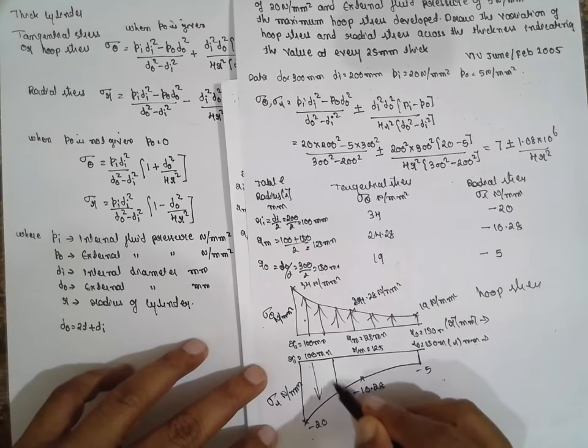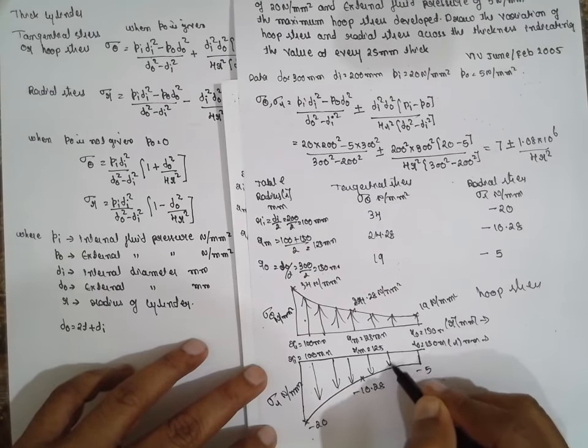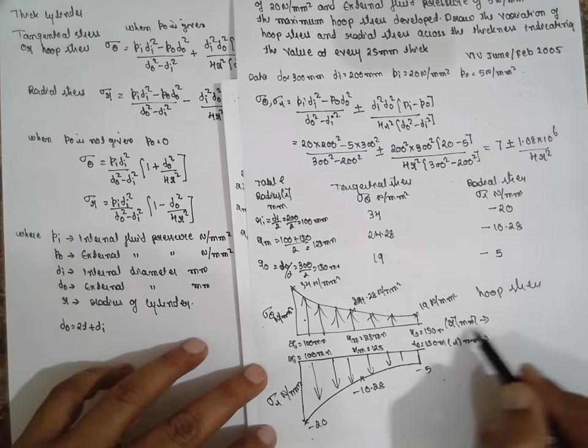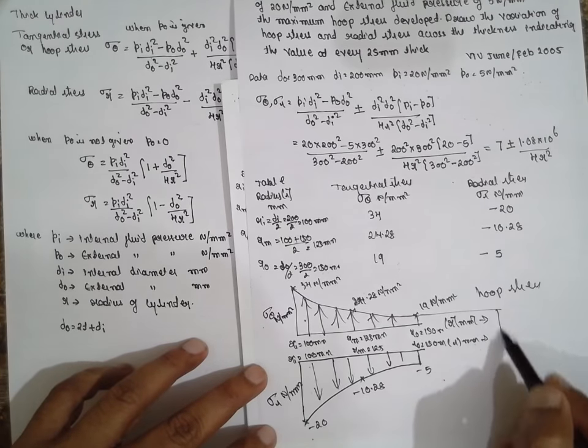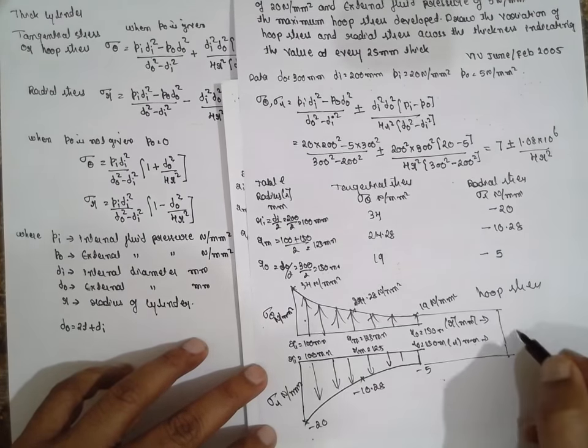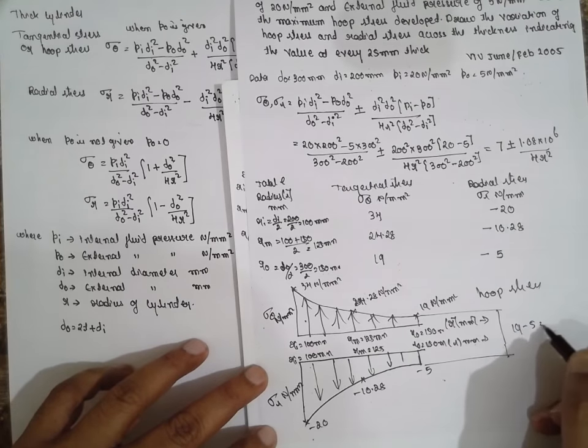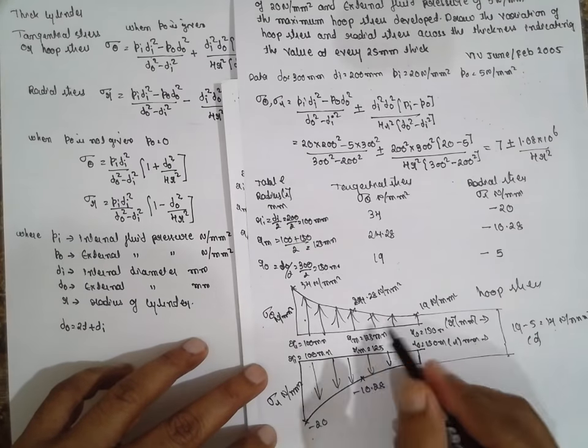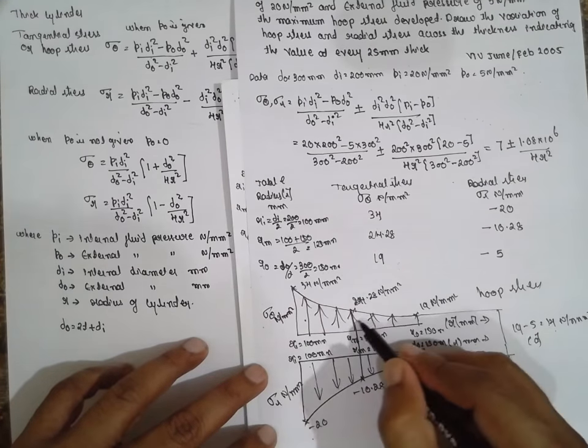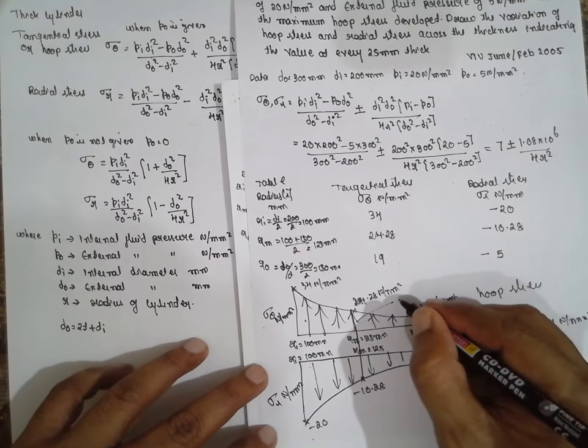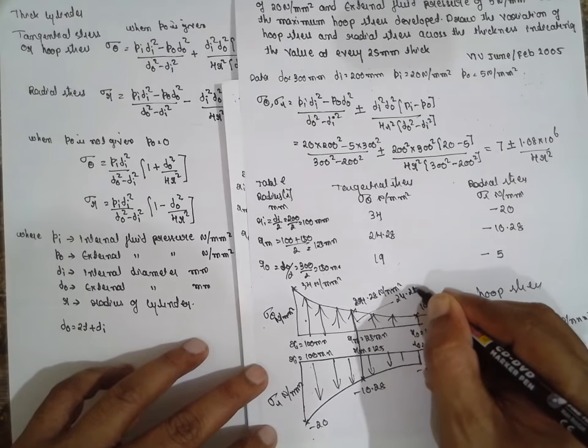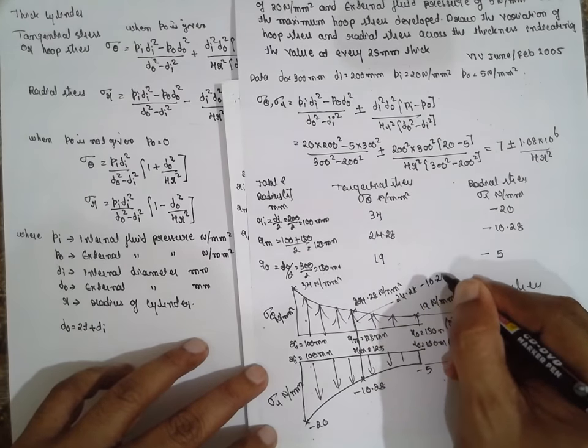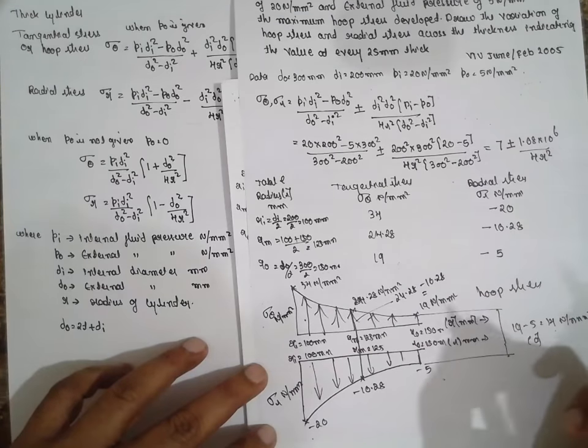If you measure the difference here from this part to this part, 19 minus 5, it will be 14 Newton per mm square. Sometime in books it is called as A value. If you measure the difference here, it is also 24.28 minus 10.28, it will be 14.